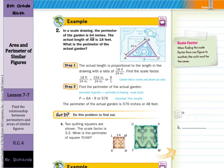Now, in example two, in a scale drawing, the perimeter of the garden is 64 inches. The actual length of AB is 18 feet. What is the perimeter of the actual garden? In step one here, the actual length is proportional to the length of the drawing with the ratio 18 feet over 24 inches. So we want to find that scale factor.